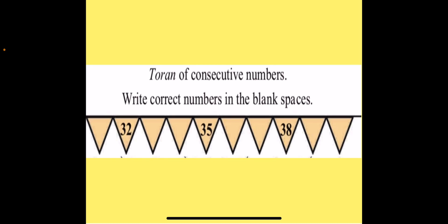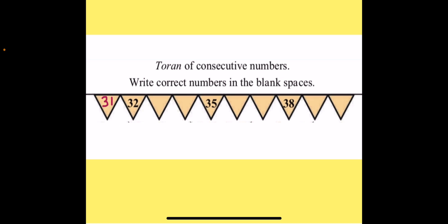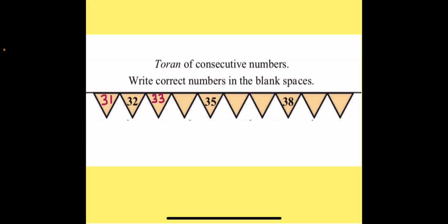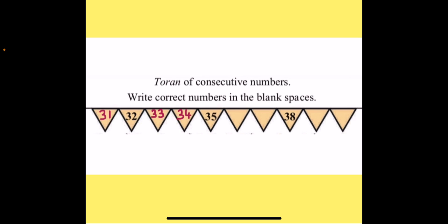Now we will solve the exercise given below the page: Write correct numbers in the blank spaces. Children, blank spaces are given so we have to fill up the missing numbers. The first blank is empty and the next number given is 32. So which number comes before 32? Yes, number 31. So 31, 32. Now after 32 which number do we get, children? Yes, 33. And our next number after 33 is 34.